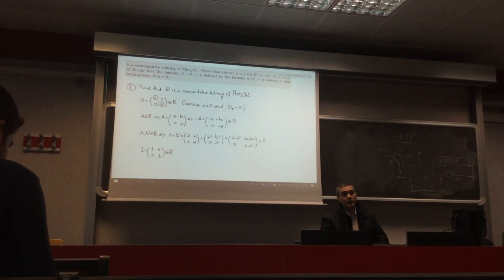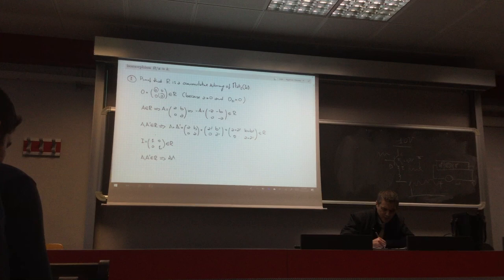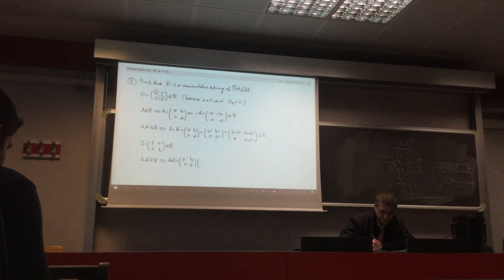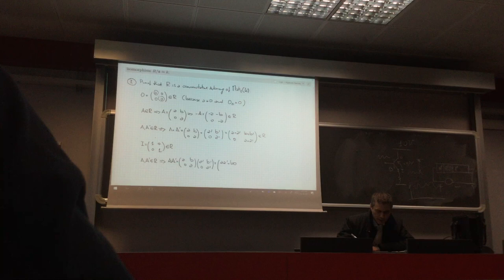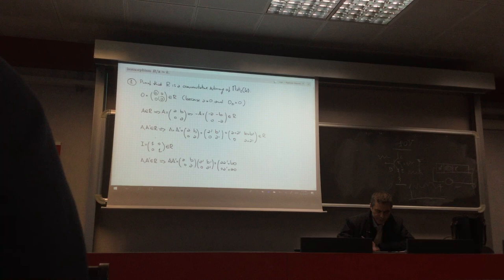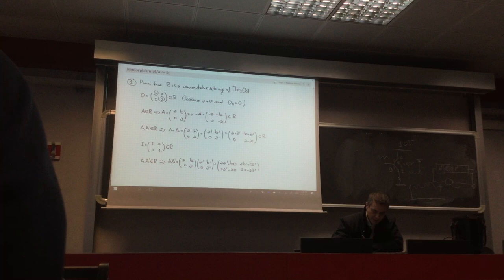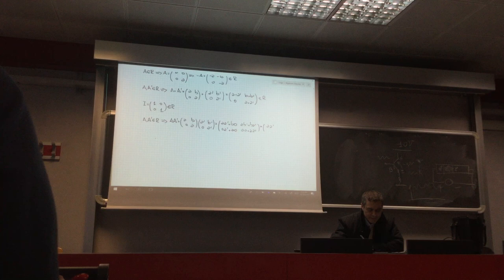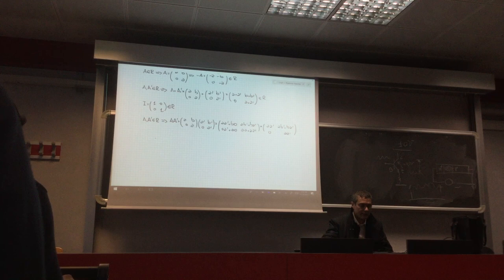For the product: if A = (A, B; 0, A) and A' = (A', B'; 0, A') are in R, then AA' = (AA', AB' + BA'; 0, AA'). The element in position (2,1) is 0, and the diagonal elements AA' are equal, so the product is in R. Thus R is a subring.